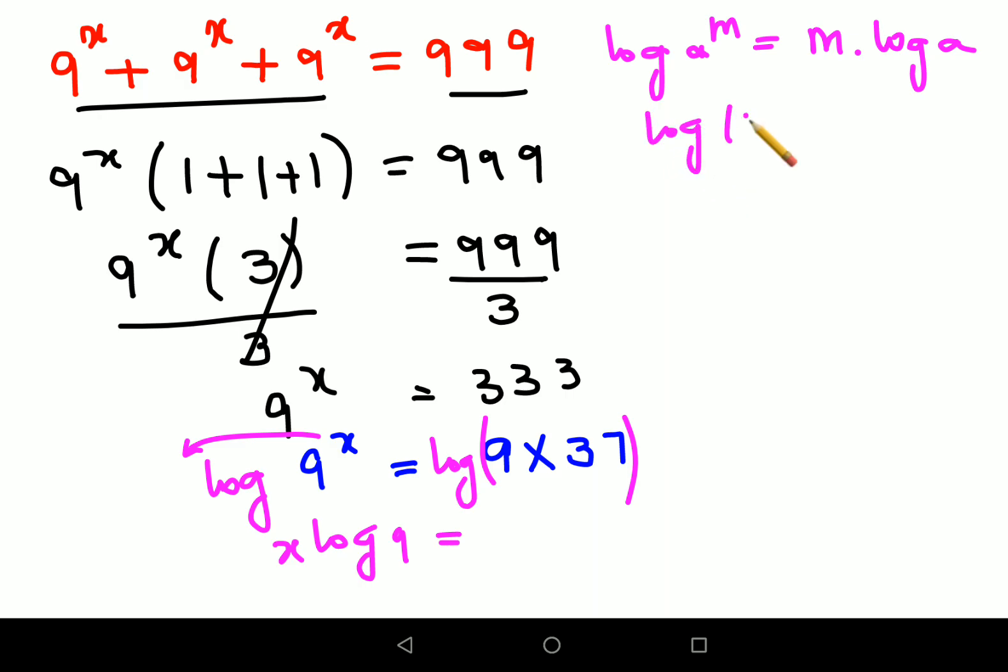Now log of any product is log of a plus log of b. So this will be written as log of 9 plus log of 37.